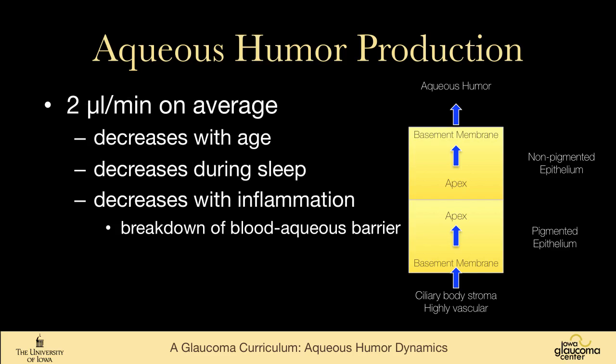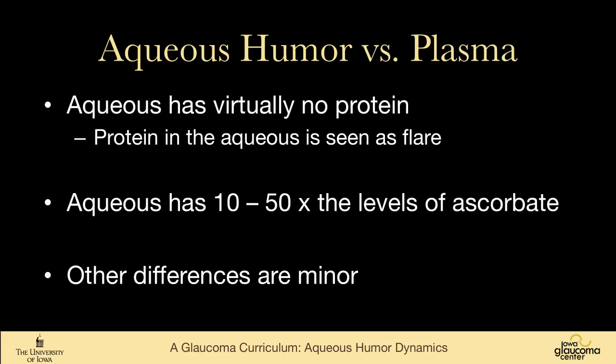On average, aqueous production is around 2 microliters per minute. This goes down as we age, decreases as we sleep, and inflammation causes it to decrease as we break down the blood-aqueous barrier. There are subtle differences between aqueous humor and plasma, but two main ones: aqueous has virtually no protein, which is why it's crystal clear — protein in the aqueous becomes flare. The aqueous has 10- to 50-fold the levels of ascorbate that plasma does.